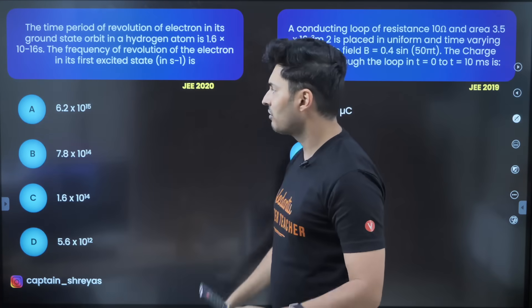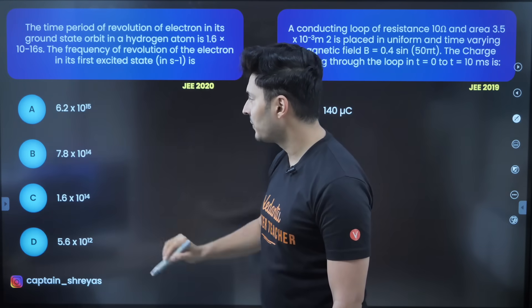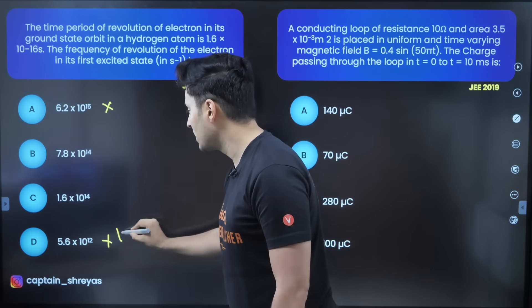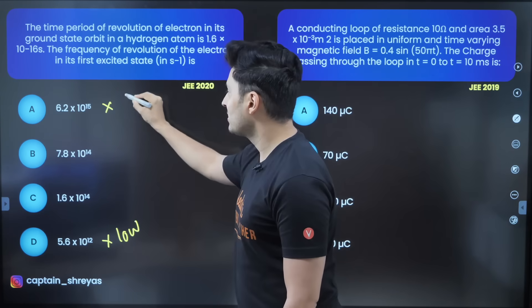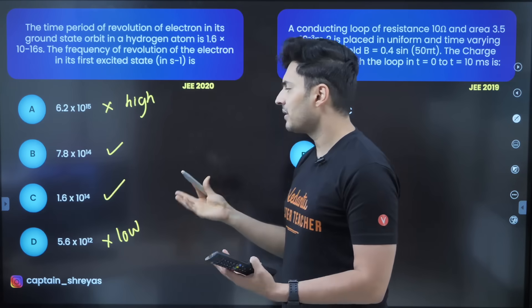Now let's see question number three: 10 to the power 15, 10 to the power 14, 10 to the power 14, 10 to the power 12. So extreme options you can just eliminate, this is the extremely low value and this is extremely high value so it will be either this or it will be either this.